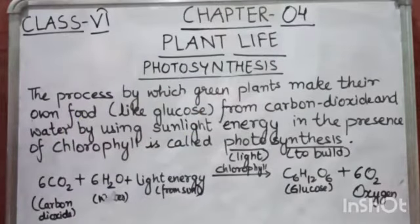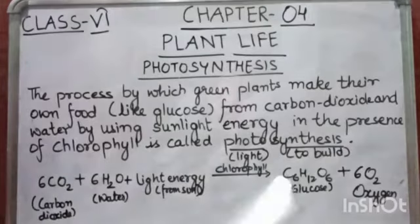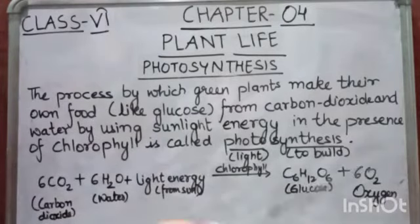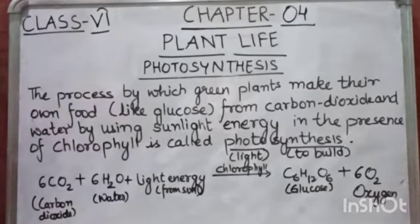So by this process, plants prepare their own food. Now see its chemical equation: CO2 carbon dioxide plus water from soil plus light energy from sun in the presence of chlorophyll. What they gave out? Glucose. They make glucose. Glucose is the food of the plants and then what they release? They release oxygen. So this process is important for humans also because during this process oxygen is released and oxygen is very important to us. We breathe in oxygen.